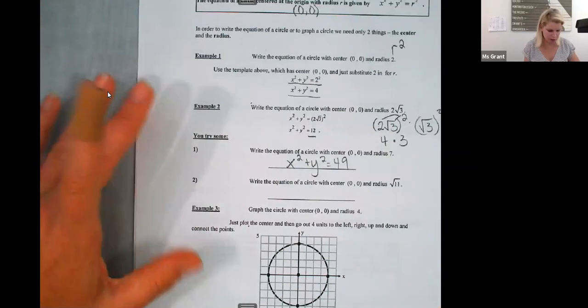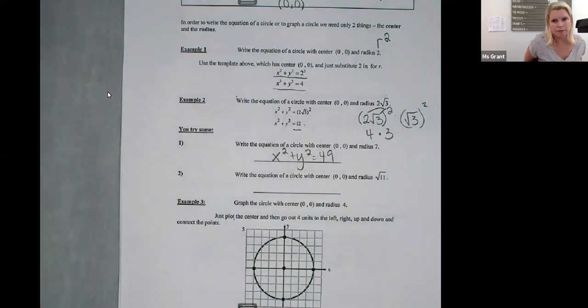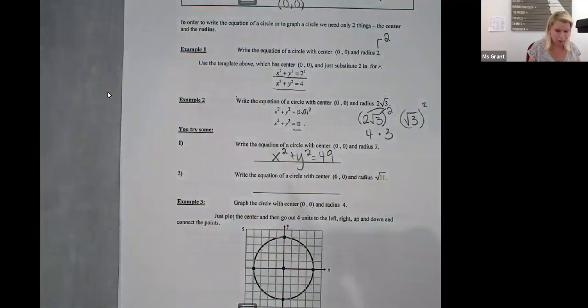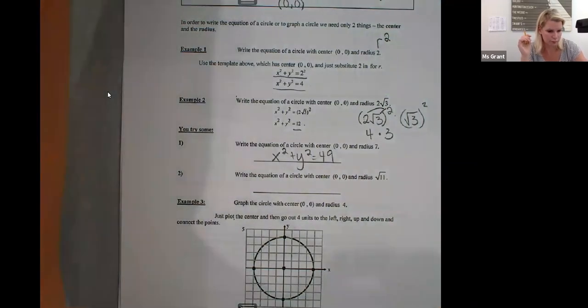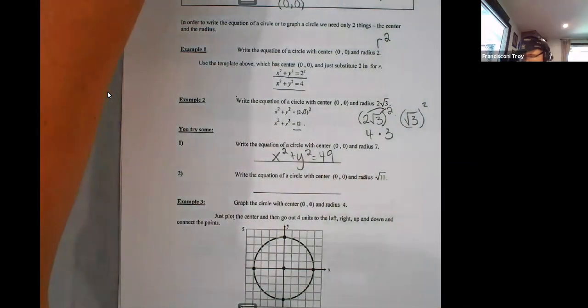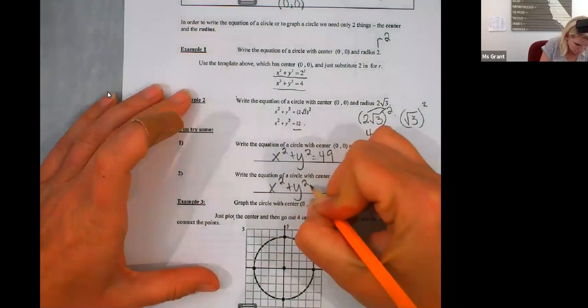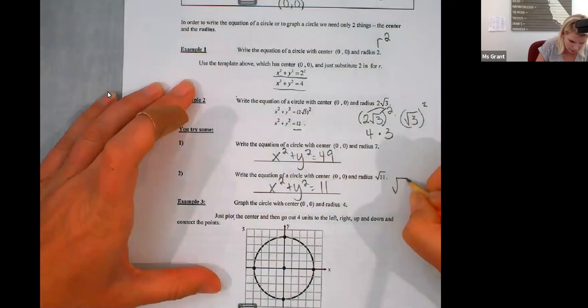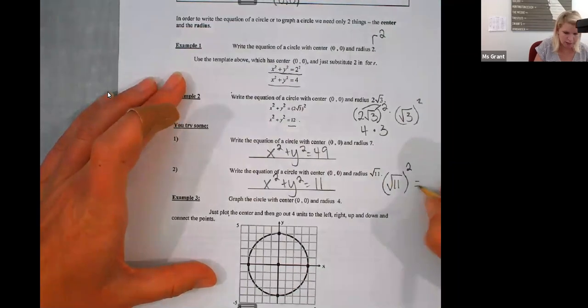Okay. Next one. Number two. It's a zero, zero. X squared plus y squared equals, and then this, go ahead. I'm not even going to say it. You try. Is it x squared plus y squared equals 11? It sure is. Great job. Because in case anybody wasn't sure why radical 11 squared is just 11.